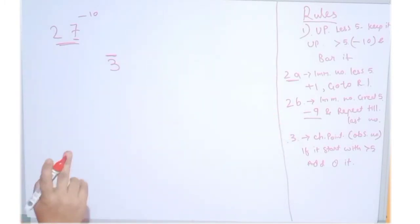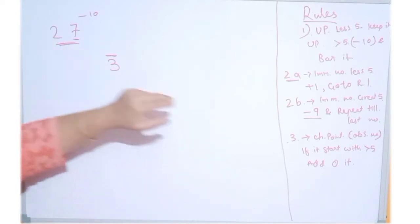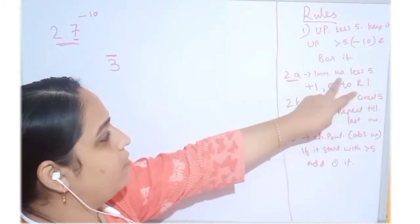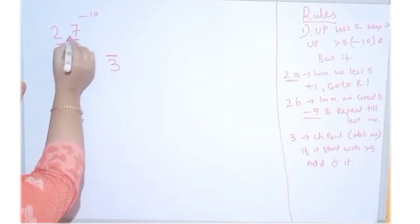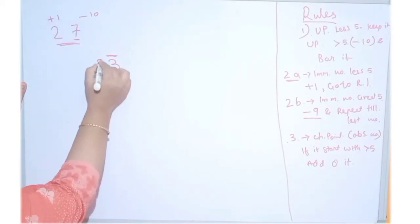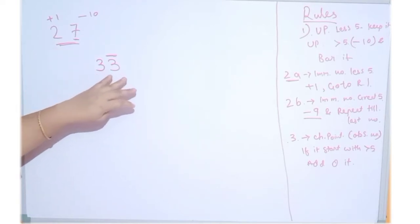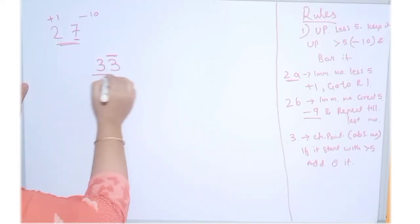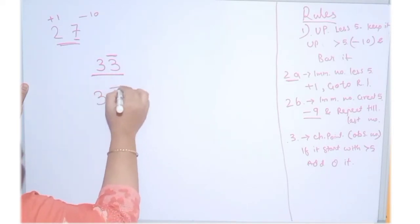Which rule will implement — 2A or 2B? We have to observe. This is Rule 2A because the immediate number 2 is less than 5. Then we have to add 1 to it. So 27 equals 3, 3 bar. We will pronounce this as '3 and 3 bar'.